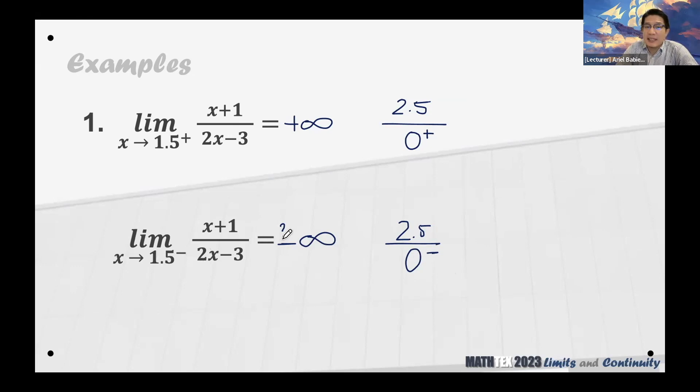So positive over negative will give us a negative infinity. The second one is a negative infinity. So I hope hindi kayo nahirapan. Again, if you have a non-zero numerator and zero denominator, automatically the limit will be infinity. Now the question for you is, is it from the positive side or is it from the negative side?